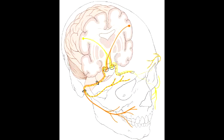Describe the upper motor neuron facial lesion. Upper motor neuron facial lesion is when the lesion occurs at the motor cortex or the connection between the cortex and the facial nucleus.